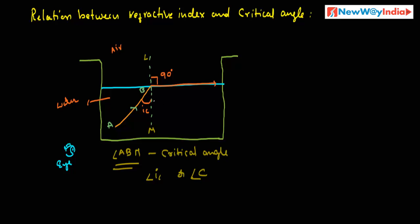Here the light ray passes from denser medium to rarer medium. The refractive angle is 90 degrees. The rarer medium is air — this is medium 1 — and the denser medium is water — this is medium 2. As rays of light are traveling from medium 2 to medium 1, according to Snell's law, the refractive index 2mu1 is equal to sin i by sin r, where i is the incident angle and r is the refractive angle.